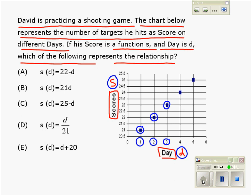Now let's see which of these given options satisfies the condition. As far as option A is concerned, for day 1, when the value of D is 1, the value of S will be 22 minus D, which will be 22 minus 1, which equals 21. So this works.